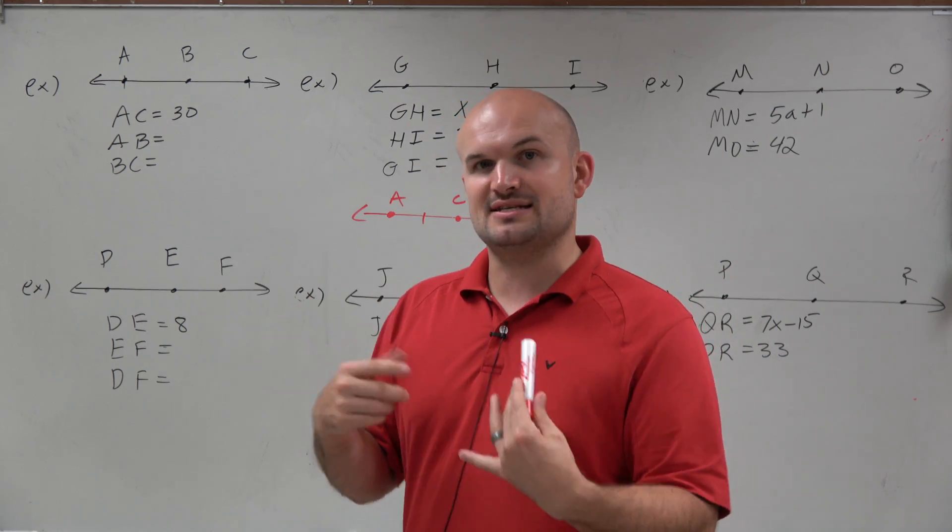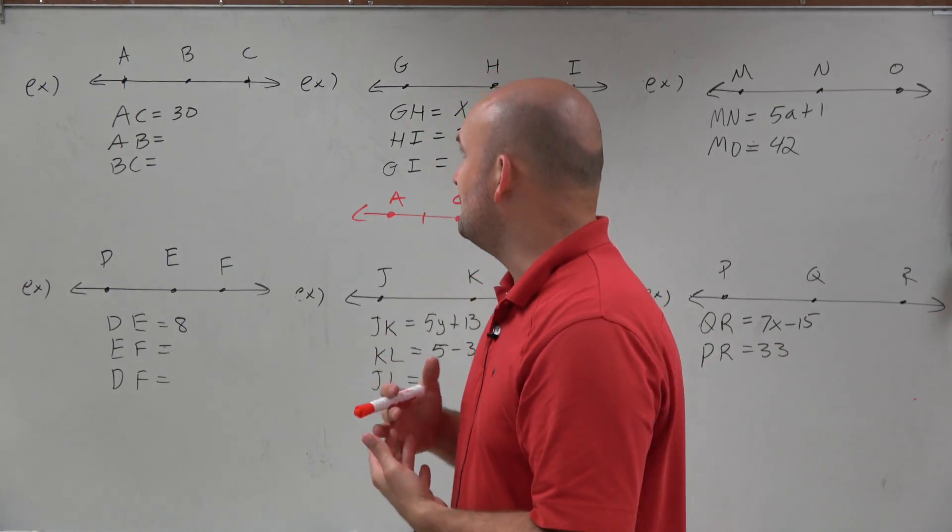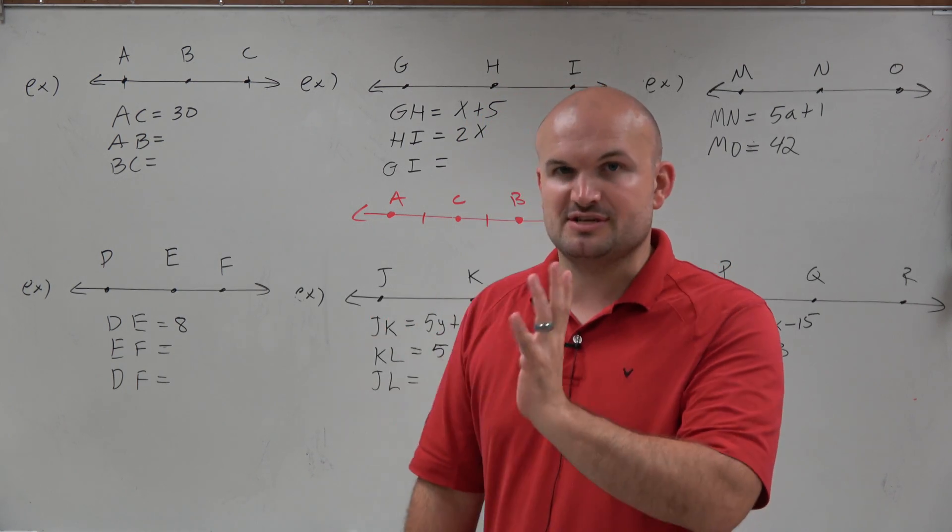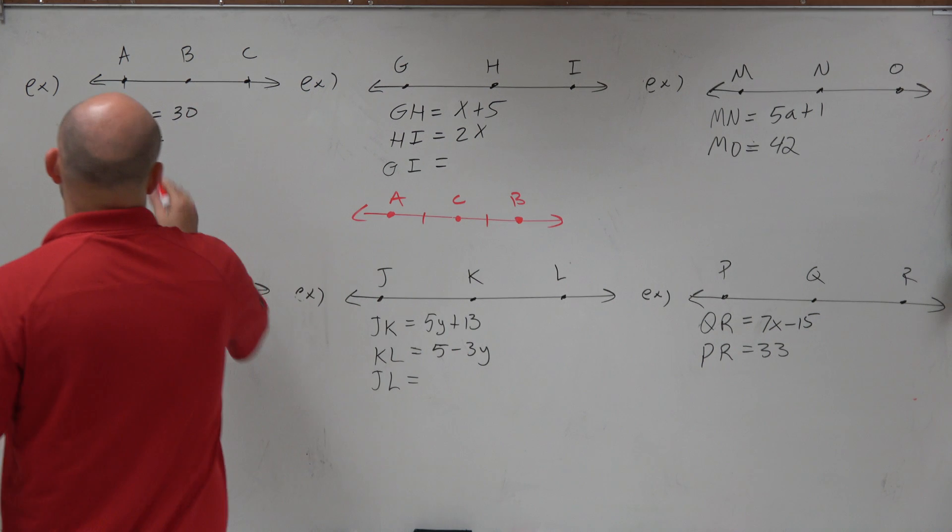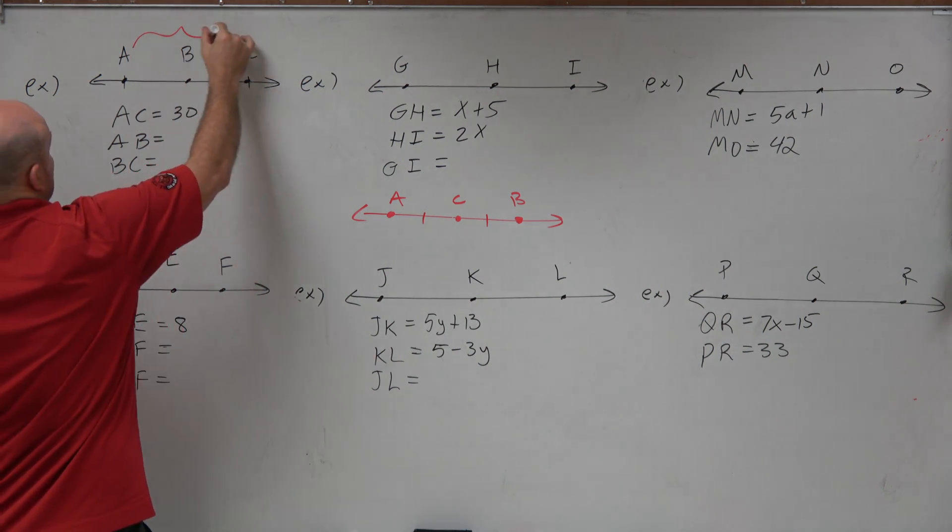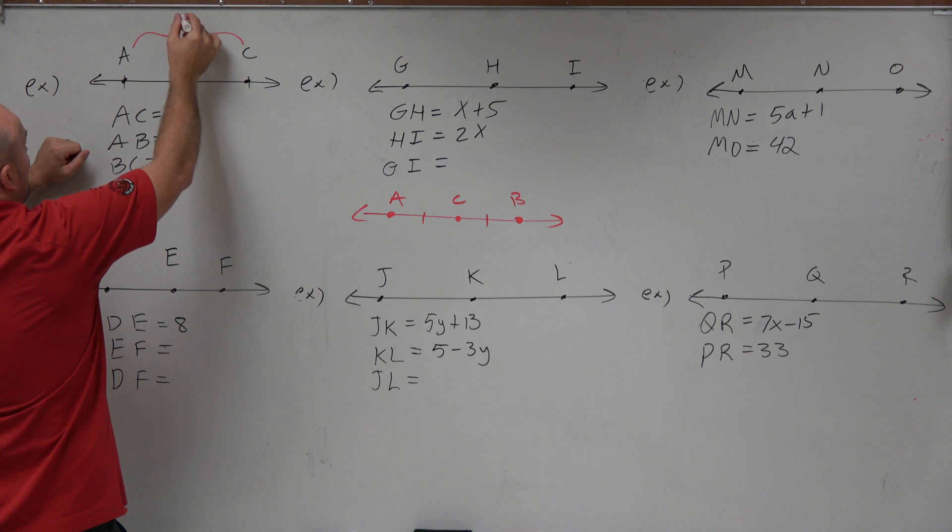So let's first just kind of discover, kind of learn about them without the crazy equations and variables. Let's just kind of work on them with a basic understanding. So in this case, if I have AC, which is going to be 30, if I want to figure out what AB and BC is, well, I know that if here's AB,